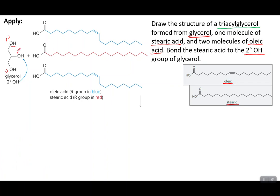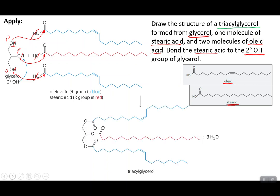So they want us to bond stearic acid to the secondary alcohol. Stearic acid, shown in red, has a long carbon-hydrogen chain. Oleic acid, which contains the double bond, is listed separately. The OH group comes off, the H comes off, and the oxygen bonds to the carbonyl carbon — that happens with each hydroxyl group. The final molecule shows stearic acid bonded to the secondary alcohol in red, with the two oleic acid molecules bonded to the primary alcohols. This is what a triglyceride looks like: three fatty acids bonded to a glycerol molecule via ester functional groups.